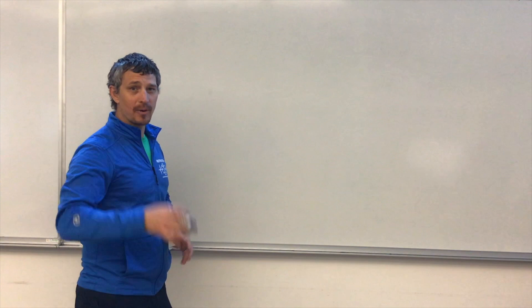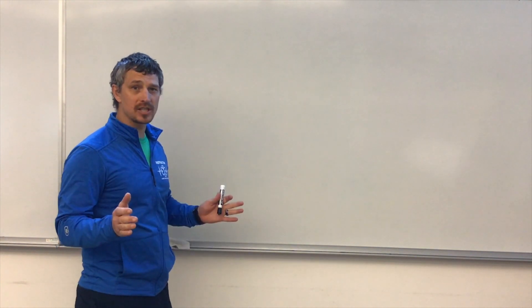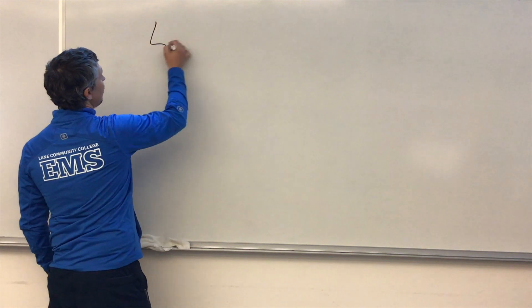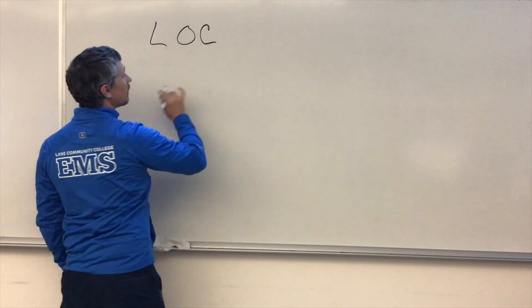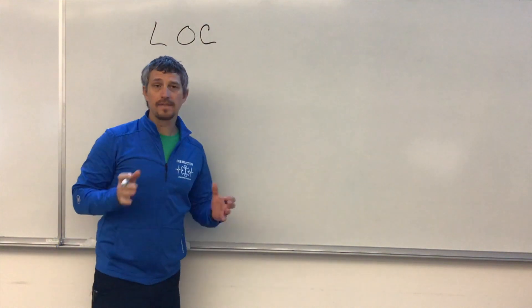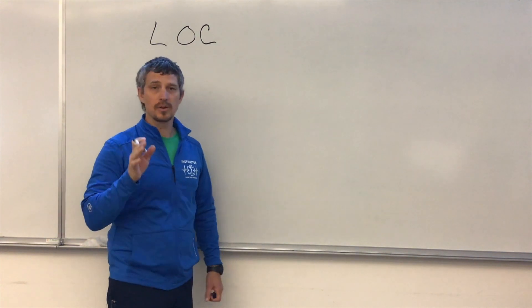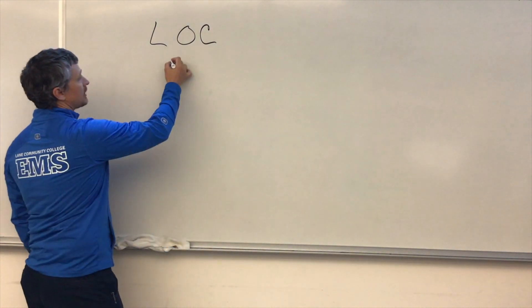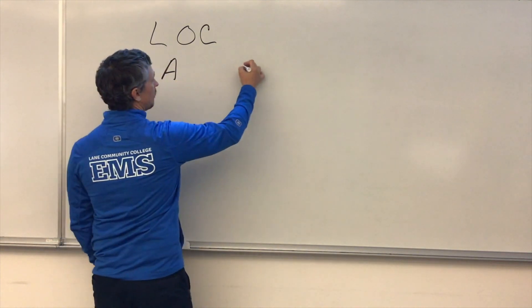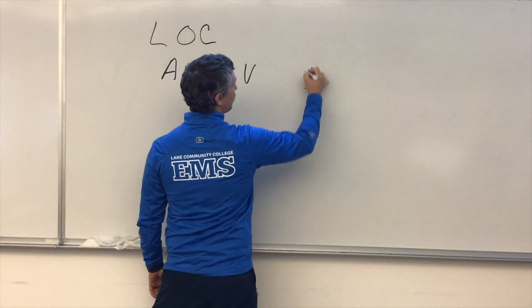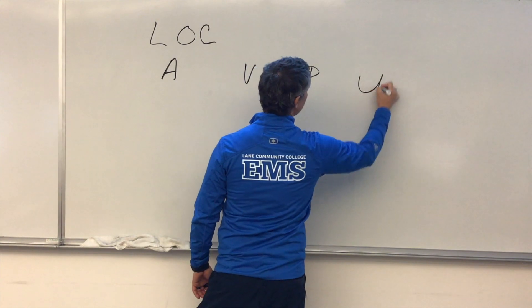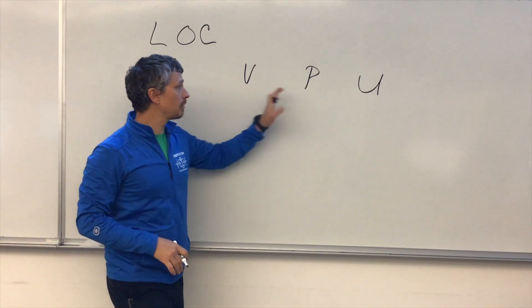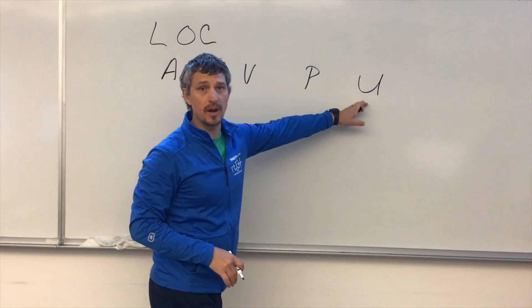Welcome back. Today we're going to talk about our LOC, which is our level of consciousness. To figure out our level of consciousness, we use an acronym called AVPU. That's going to be A-V-P-U, which stands for Alert and Oriented, Verbal, Pain, and Unresponsive. We'll cover that in a second.